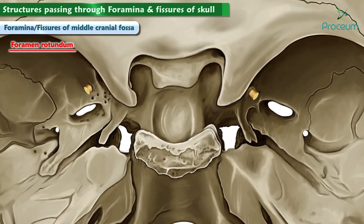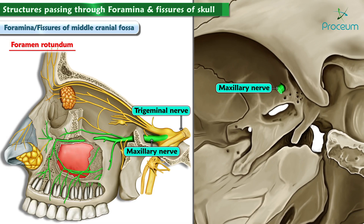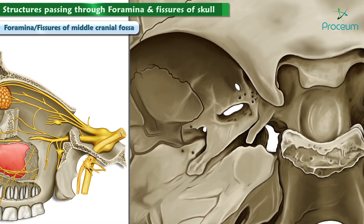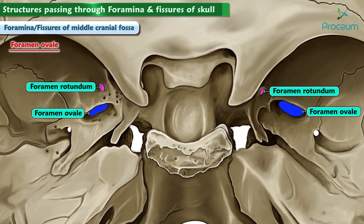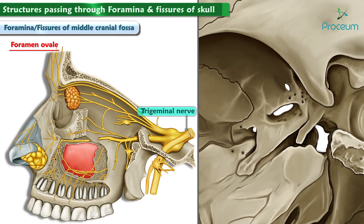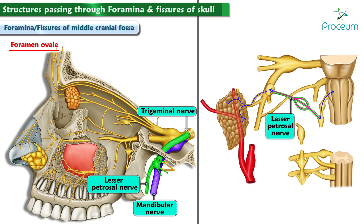The foramen rotundum allows passage of the second division of the trigeminal nerve, the maxillary nerve, carrying sensory information from the face below the eyes, the upper lip, and the skin overlying the maxilla bone. The foramen ovale is oval-shaped and lies posterior and lateral to the foramen rotundum. It allows passage of the mandibular nerve, the final division of the trigeminal nerve, and also the lesser petrosal nerve — a branch of the ninth cranial nerve, the glossopharyngeal nerve — which innervates the parotid gland.